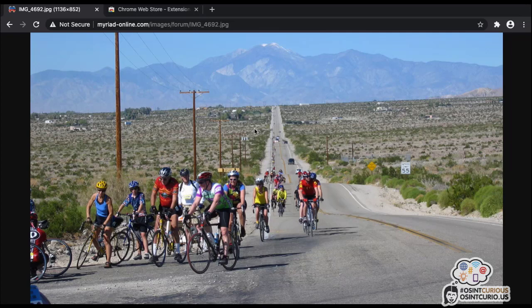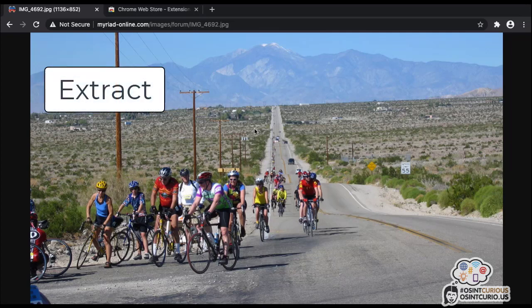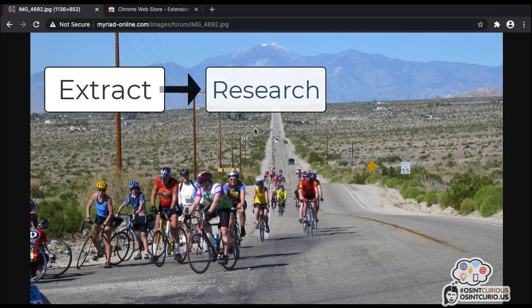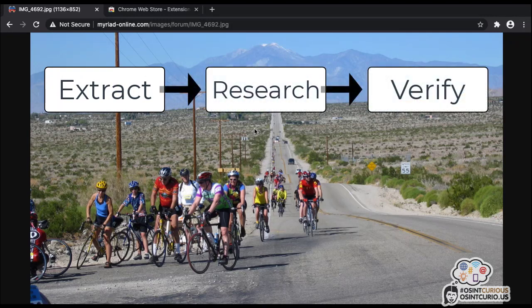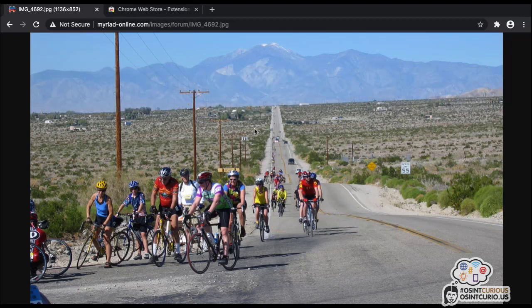Most photos we come across require slightly more complex techniques, which we'll look at in later videos. For now, we're going to look at this photograph of cyclists out in the desert and learn how to extract EXIF data from this image, because it does contain EXIF data. We're going to extract the information, research it, and then verify it. You'll hear me say those phrases — extract, research, verify — again and again, because that is the outline of the methodology we're going to use.